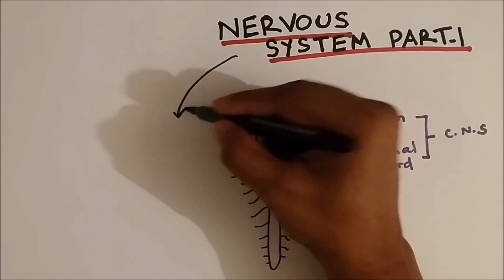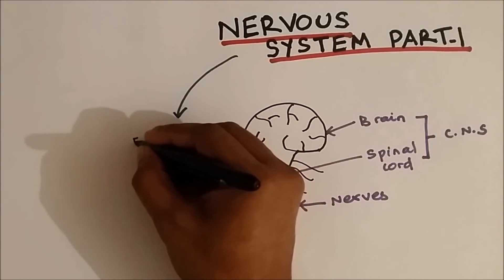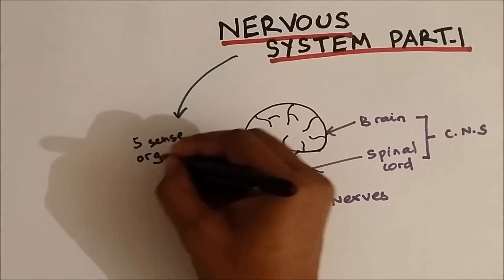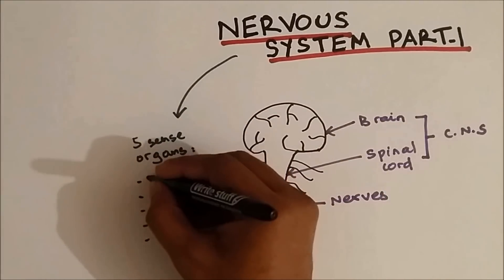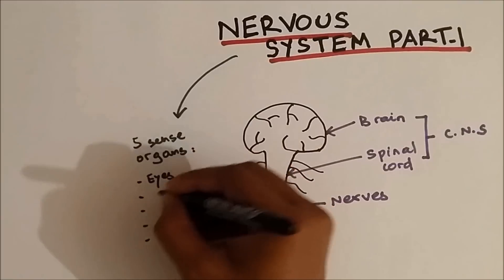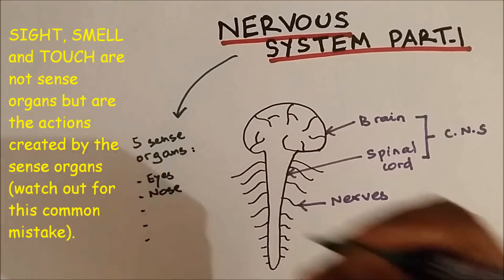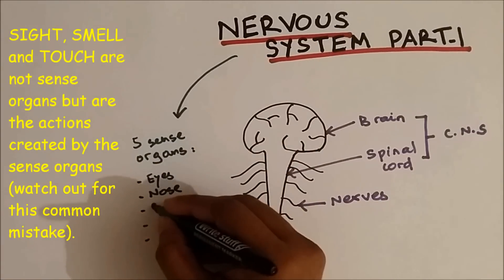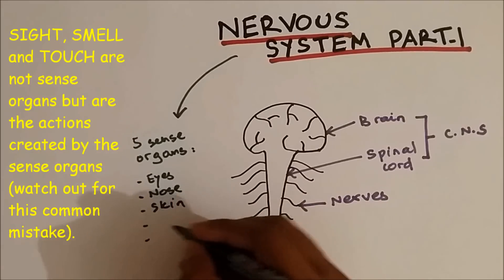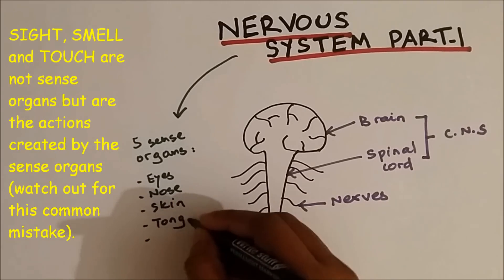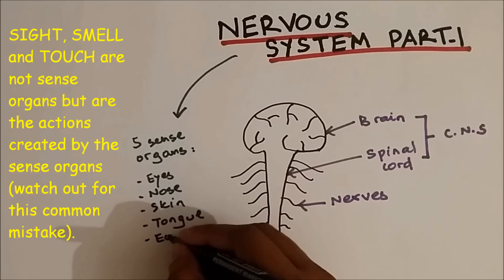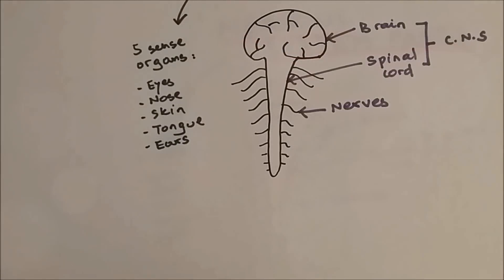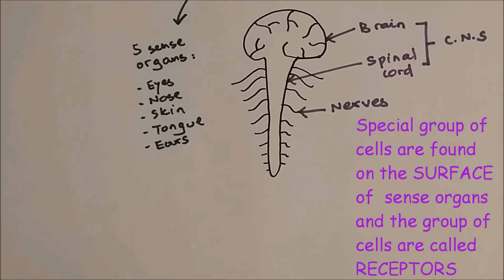The nervous system contains five sense organs, and these are: eyes, nose, skin, tongue, and the last one is the ears.